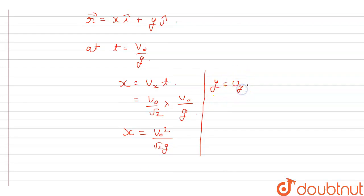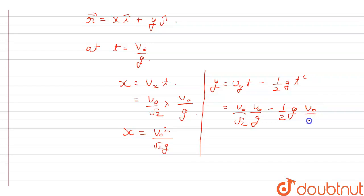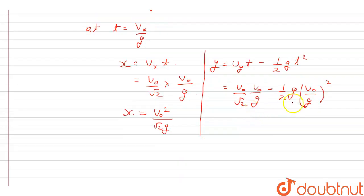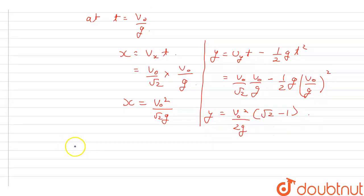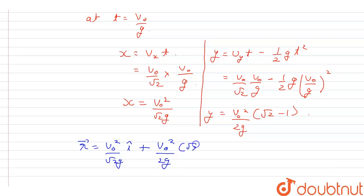For y, from the kinematic equation y equals uy times t minus half g t squared. Substituting uy equal to v0 upon root 2 and t equal to v0 upon g, and simplifying, y equals v0 squared upon 2g times (root 2 minus 1). So the position vector r is v0 squared upon root 2 g i-cap plus v0 squared upon 2g times (root 2 minus 1) j-cap.